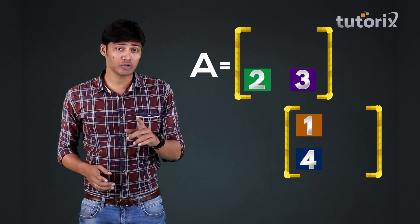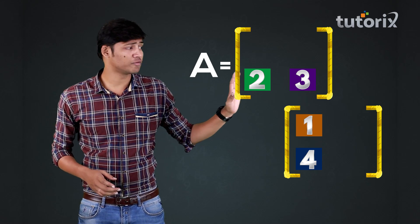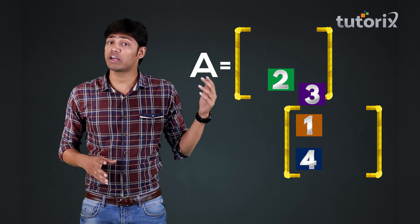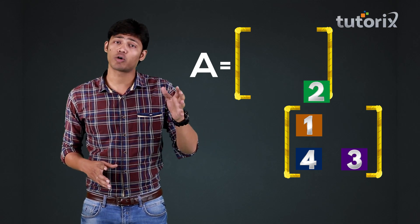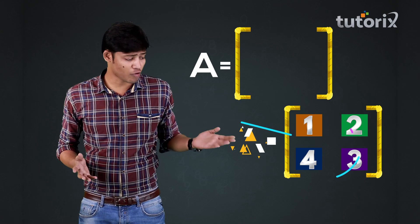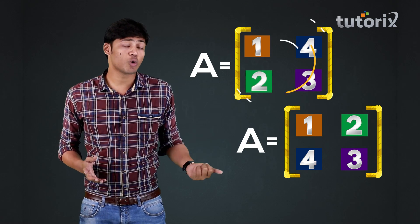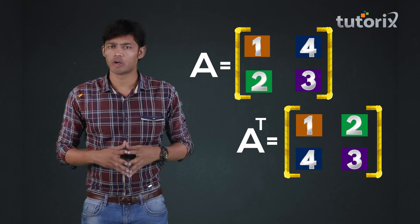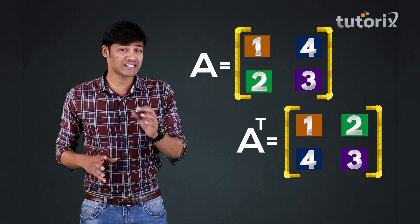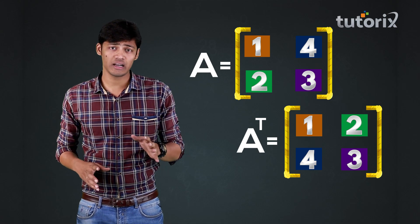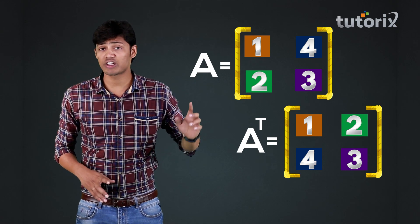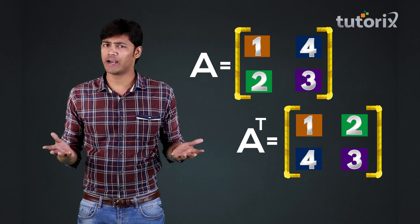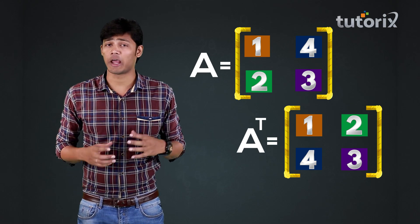Now let us push the second row of this matrix A in such a way that block 3 will fall first and then the block 2. The new matrix formed is known as the transpose of the matrix A. So what we have essentially done is we have interchanged the rows and columns of the matrix A to get the matrix transpose of A.